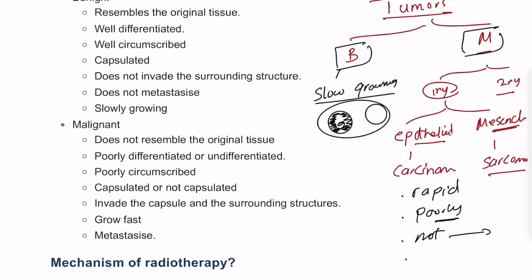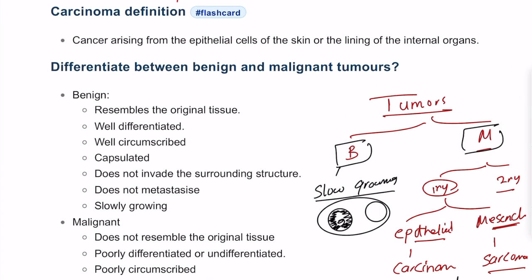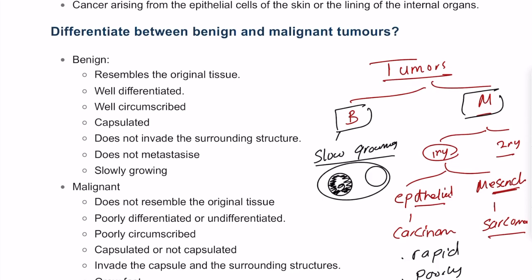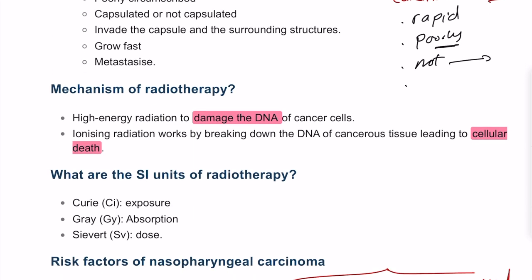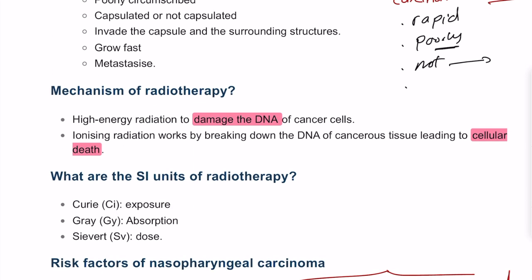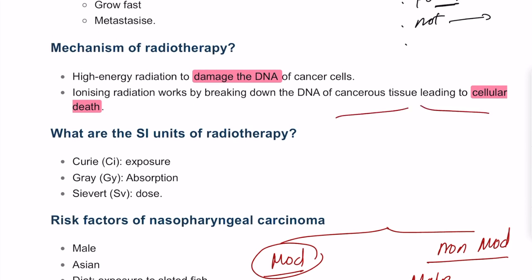To recap: carcinoma is a tumor of epithelial origin. We differentiated between benign and malignant tumors — one resembles the tissue of origin, the other does not — and made a detailed comparison between them.